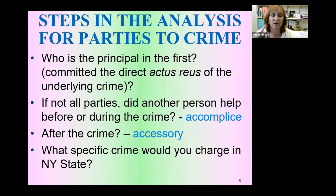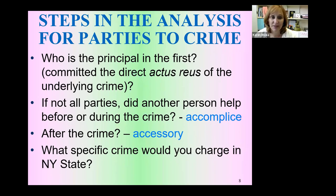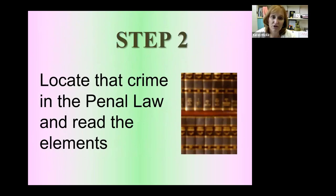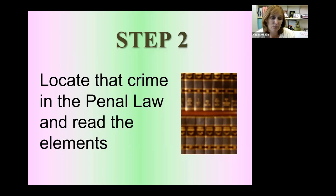We're going to go through the parties of crime analysis. Step one: who is the principal in the first — who committed the underlying actus rea? In our case, it was the father. Are there other parties? Yes, the sons were there. Did they help before or during the crime? No, they did not. Did they help after the crime? Maybe they did — so that's where we fall under accessory. Step two: we need to think about what New York accessory crimes we could charge, and pick the specific section of the New York Penal Code. In step one, we thought about the common law definitions; in step two, we pick the specific New York crime.